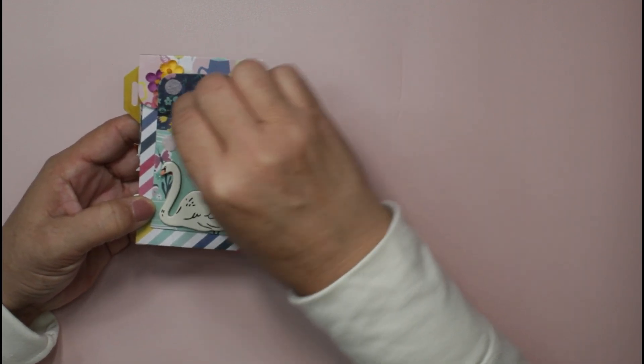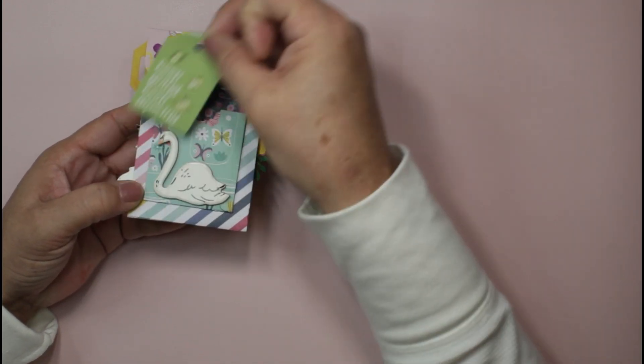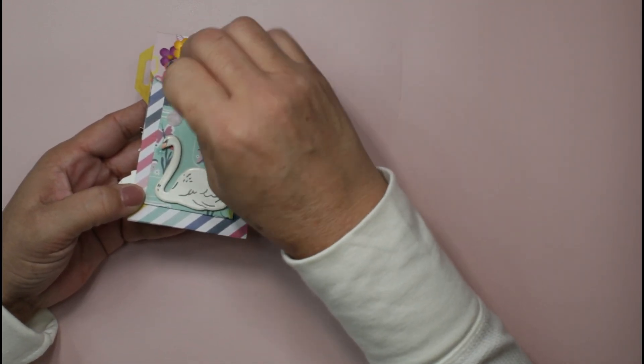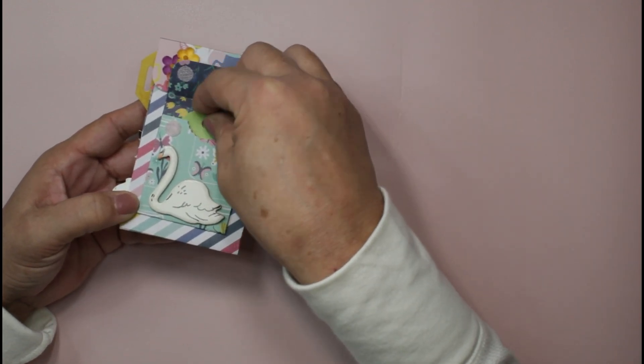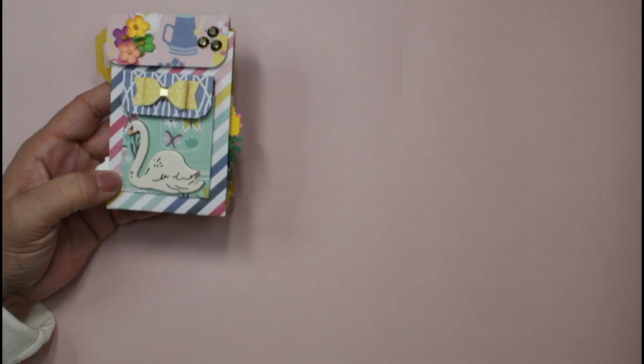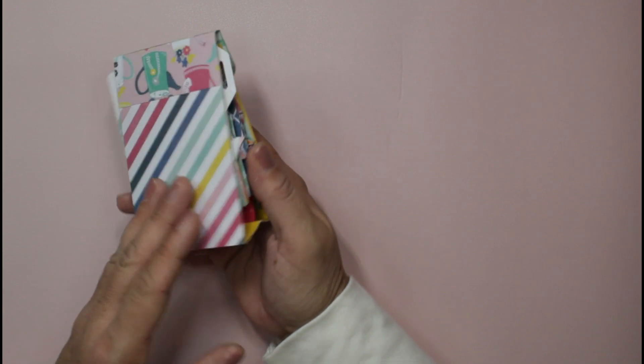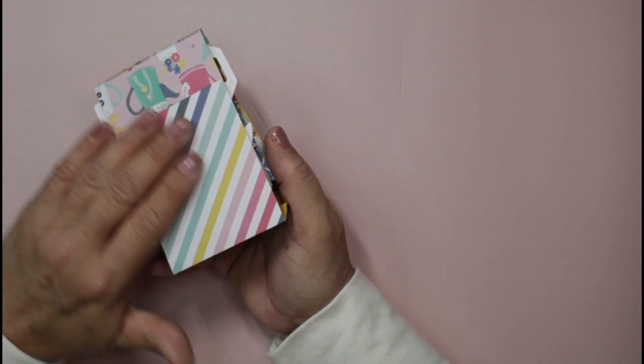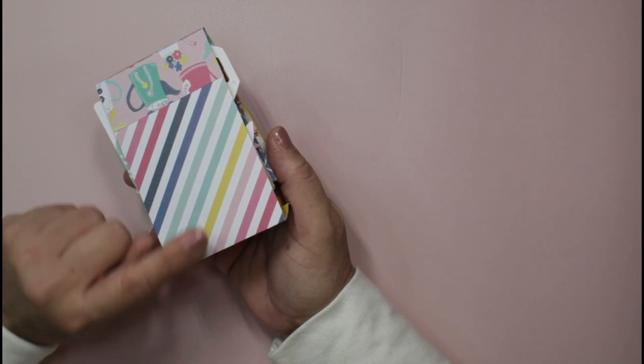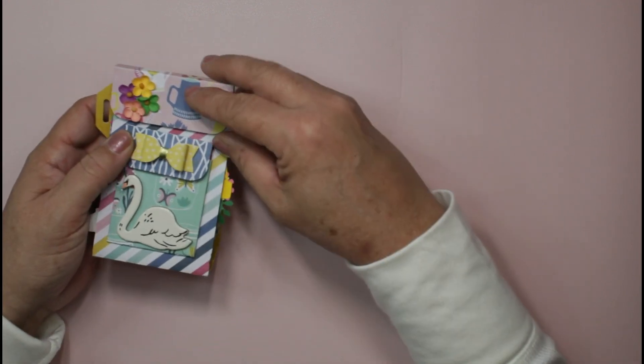When you open it, I just have a little tag in there, but you can certainly add anything you want. If you're sending this out as part of a happy mail, you can certainly send out little stickers and things like that. And then on the back, I did not decorate at all, so I left that kind of as is. But I'm loving the two different variations of the paper.